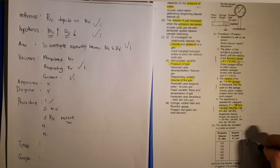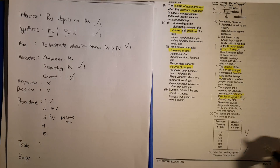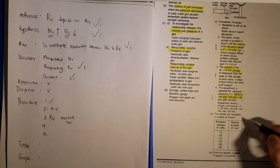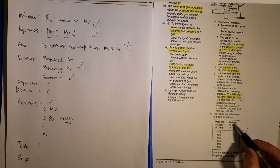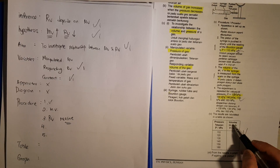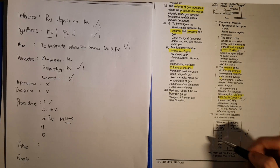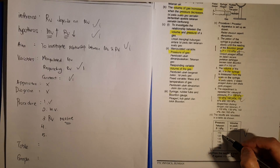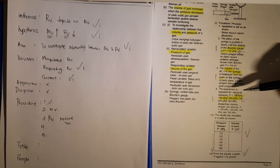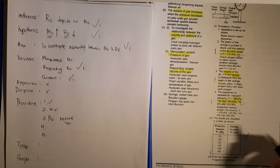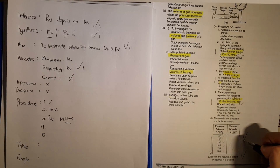Finally, the last two marks are very simple. You draw a table with your manipulated variable and your responding variable, including units. Fill in the values for your manipulated variable — the readings you suggested earlier — then leave the responding variable column blank. You get one mark for that.